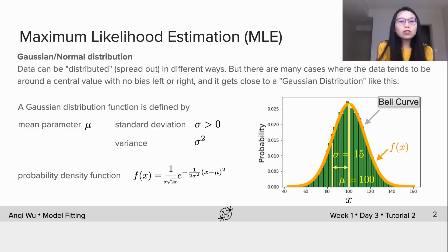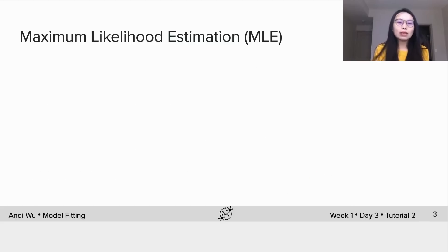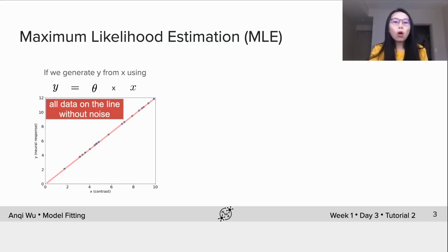So why we introduce Gaussian distribution here? Usually it's used to model the noise in the observed data. Here is what I mean by saying noise. If we generate y from x using this linear model, where x is a deterministic input, theta is also a deterministic value, then y would be a definite value without uncertainty. All the data would be on this straight line.